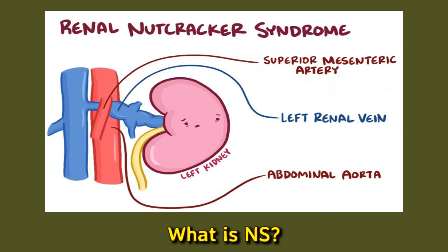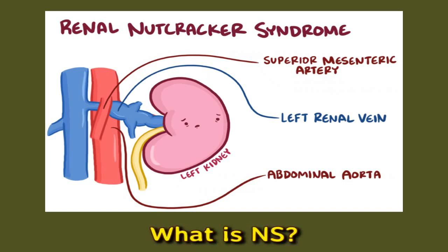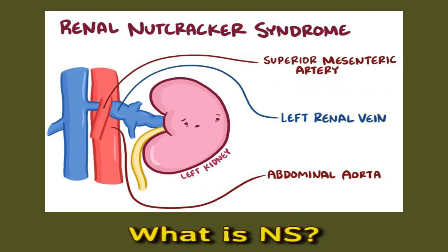Instead, the arteries press on and compress the left renal vein, interfering with blood flow. When nutcracker syndrome occurs, blood can flow backward into other veins, causing an increase in pressure. This can lead to symptoms such as left flank pain and blood and protein in the urine.